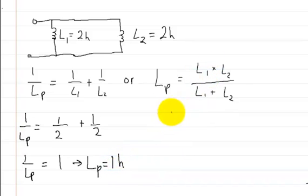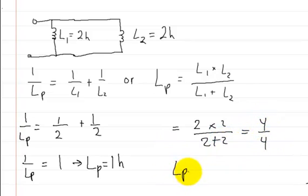Now let's try this method. This equals 2 times 2 over 2 plus 2, which is 4 over 4. So the inductance in parallel is 1 Henry. You can see that both methods give you the same answer.